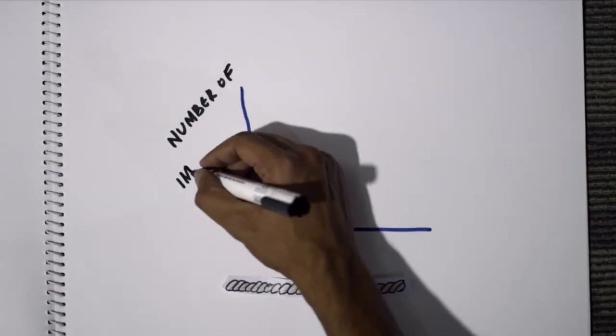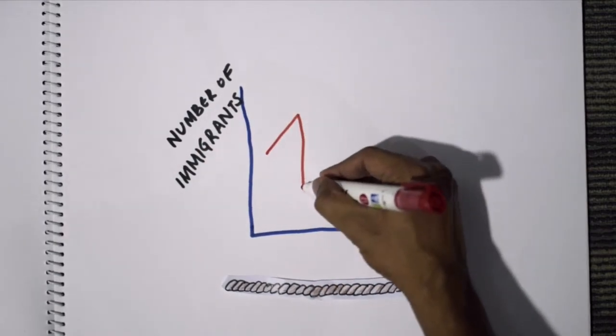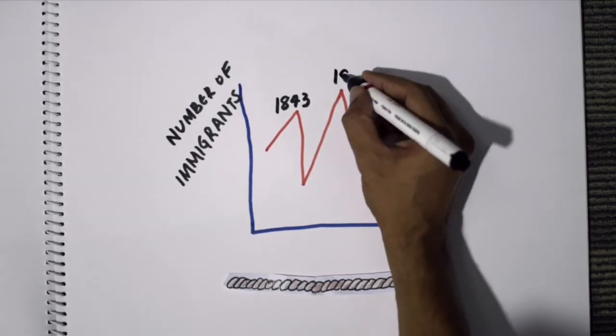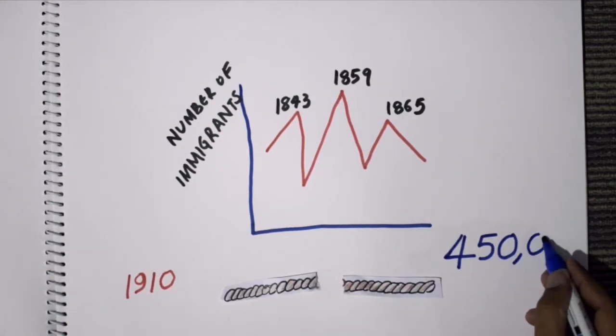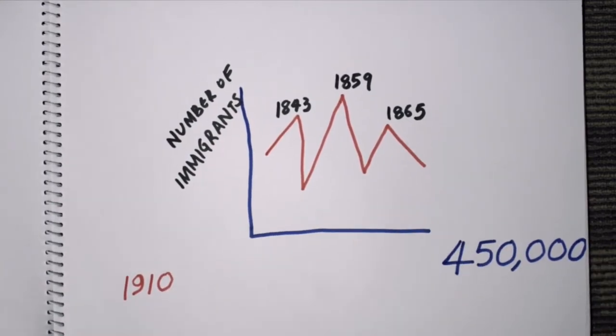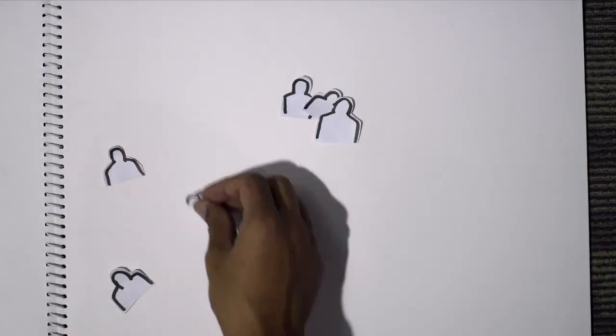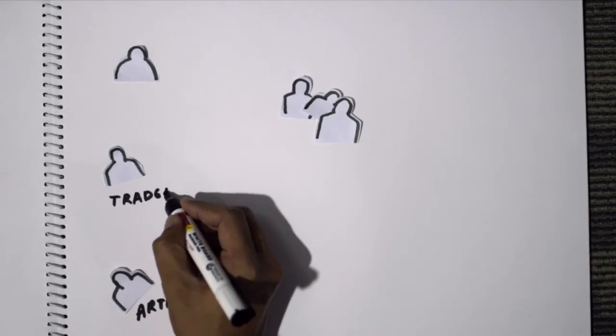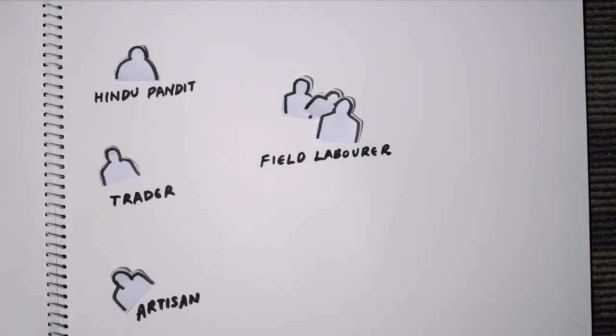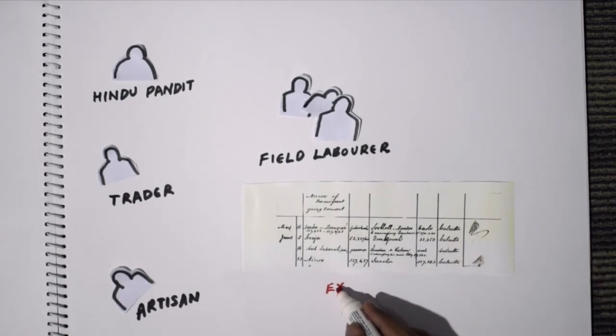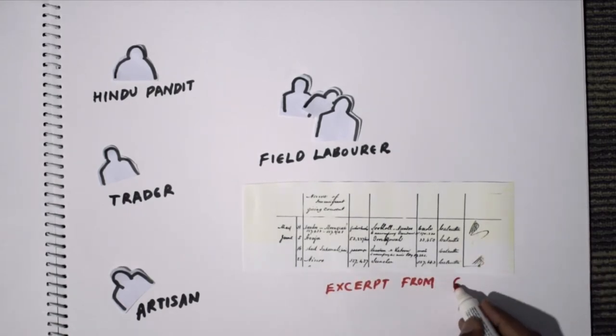The peak years of immigration were 1843, 1859, and 1865. In 1910, when indentured labor was finally abolished, approximately 450,000 people had migrated from India to Mauritius. Although the bulk of Indian immigrants to the colonies were field laborers, small proportions were artisans, traders, and even Hindu pundits. Indian indentured labor was state-regulated. Before leaving India, laborers were made to sign an agreement or a Girmit for the same.